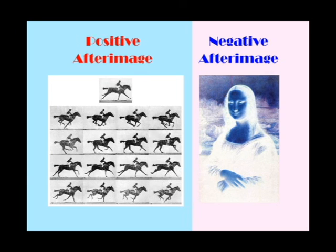Positive after image is caused by the persistence of vision, corresponding in color to the original image. While negative after image is caused by the desensitization of the photoreceptor cells, with a complementary color of the original image. Now you've learned what positive and negative after images are. Look around your room and try it yourself.